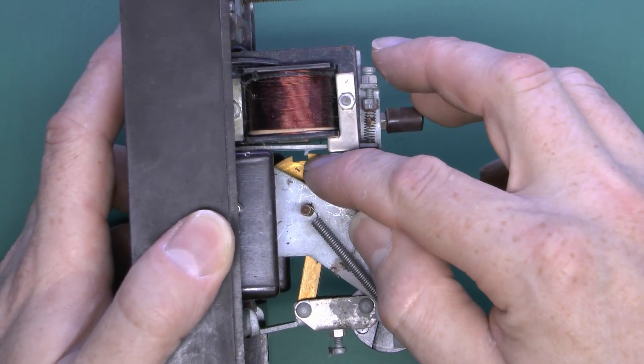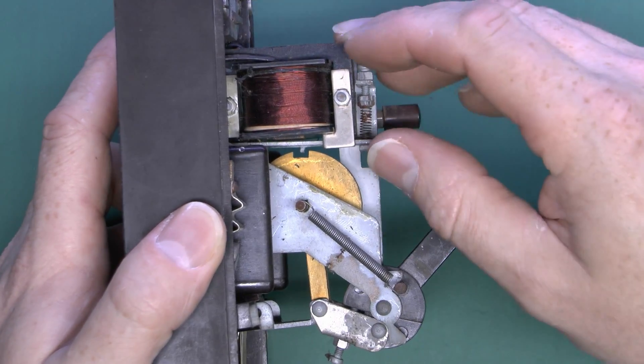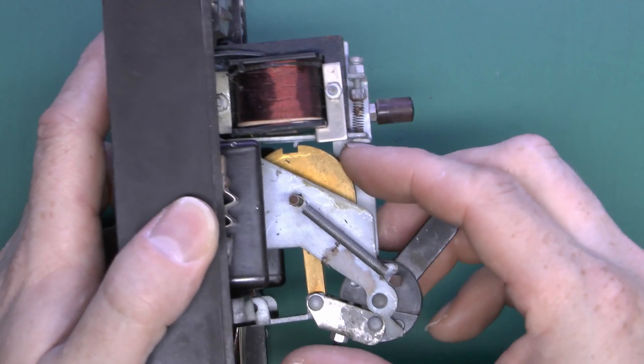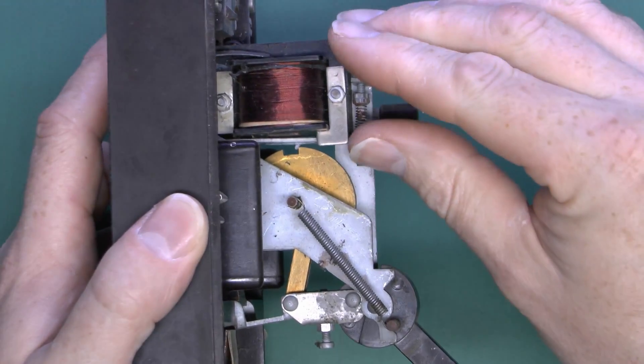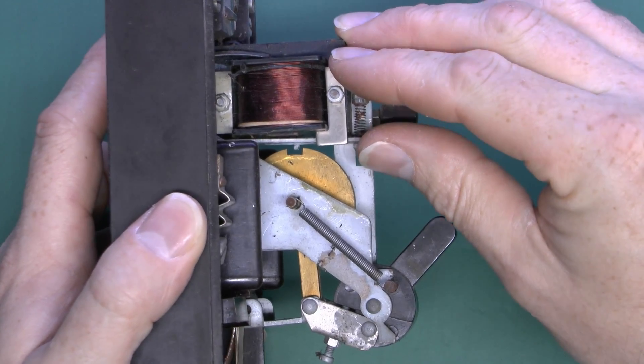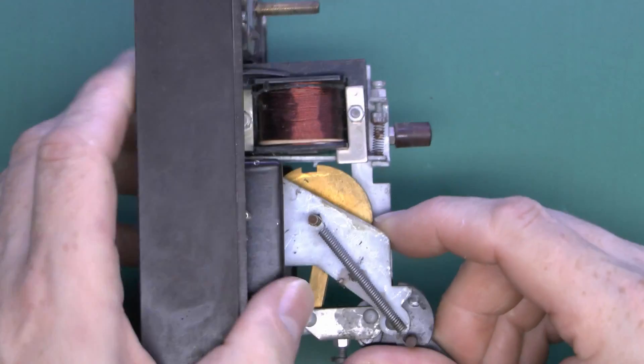Which will then release that, causing this piece in the center to move. So you can see that just releases that, then this thing will spring out of place releasing the bar at the bottom. So there that is again, and this thing essentially just turns backwards a certain distance.